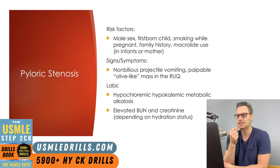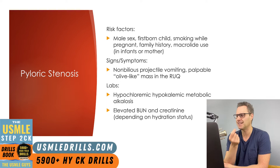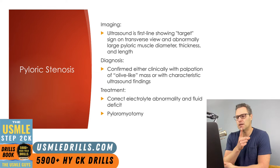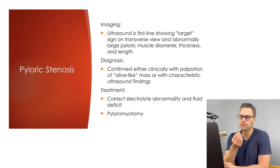Another important finding is the palpable olive-like mass typically felt in the right upper quadrant of the abdomen. Some patients present with the classic lab finding of hypochloremic, hypokalemic metabolic alkalosis as a result of vomiting. For imaging, the first-line modality is the abdominal ultrasound, where the target sign of the pylorus can be visualized on transverse view, and the presence of an abnormally large pyloric muscle diameter, thickness, and length can be confirmed.